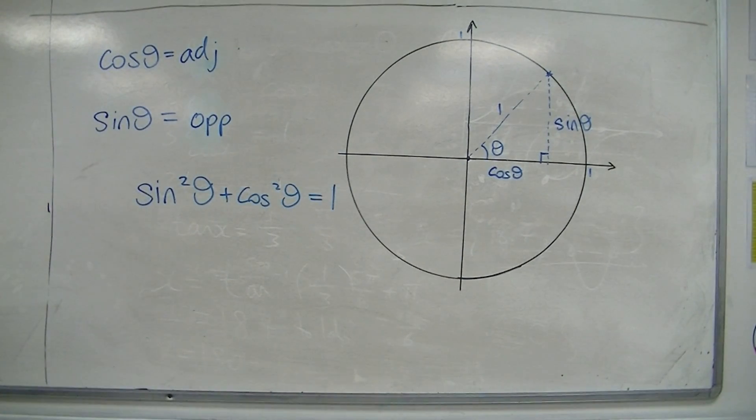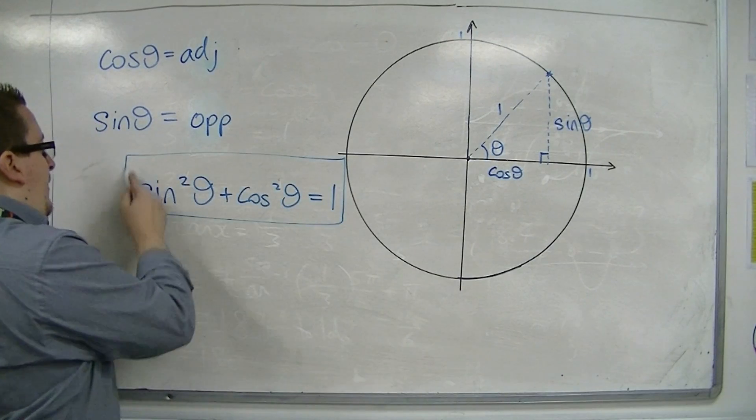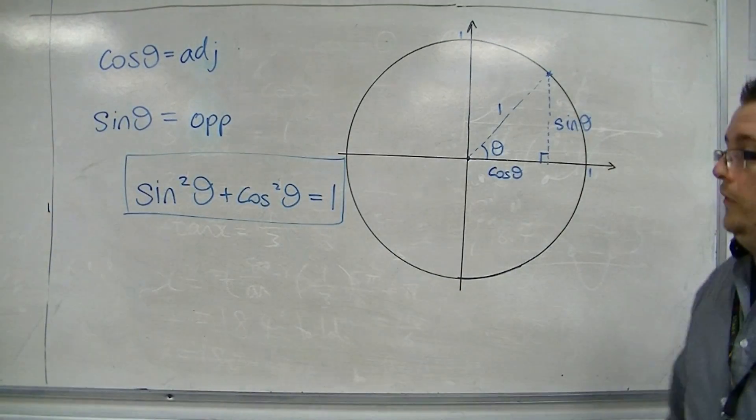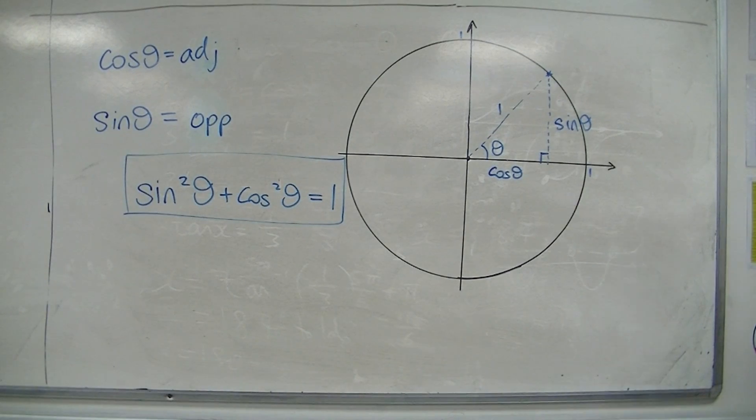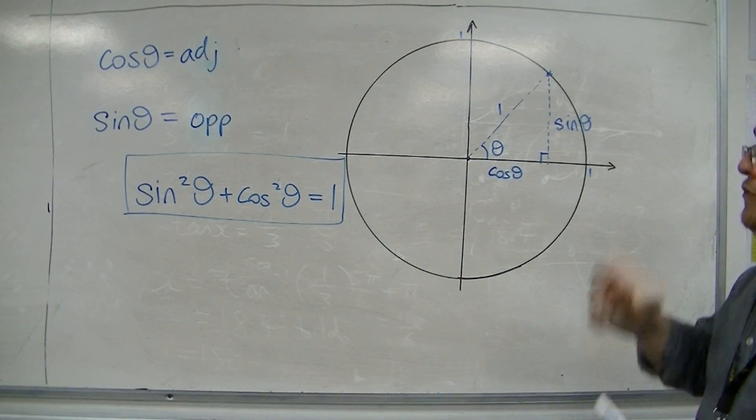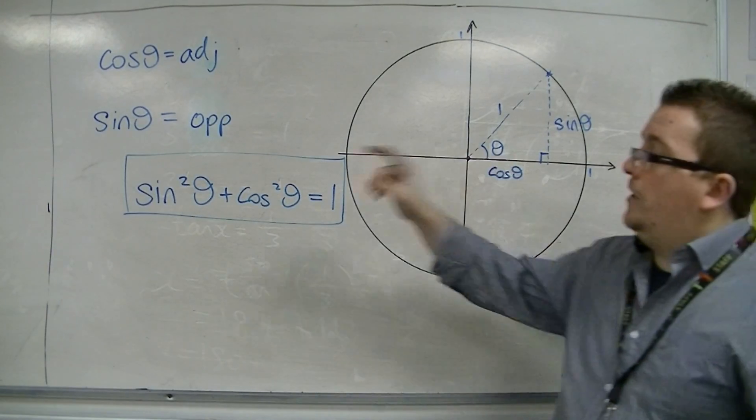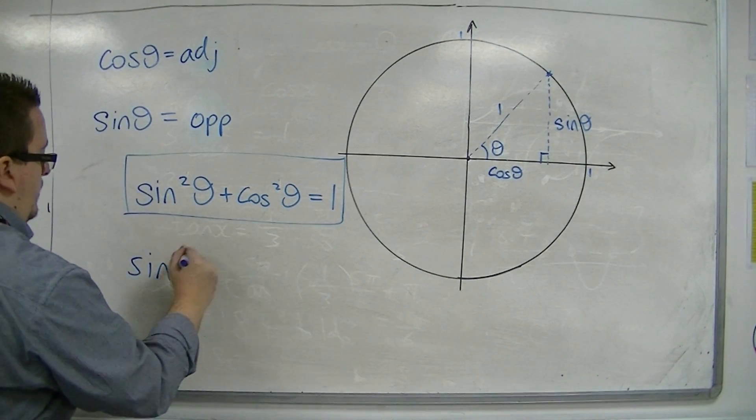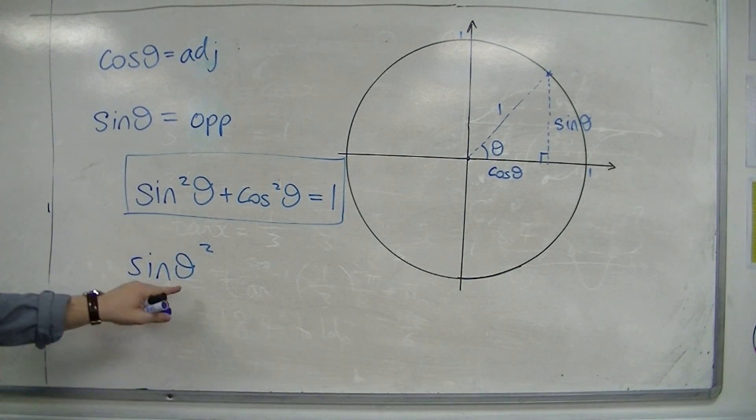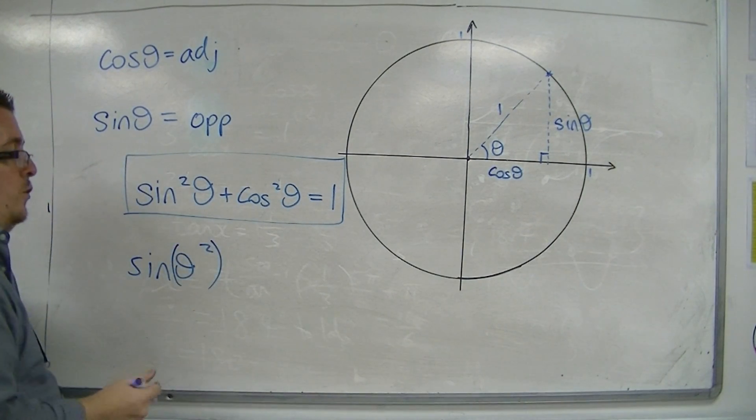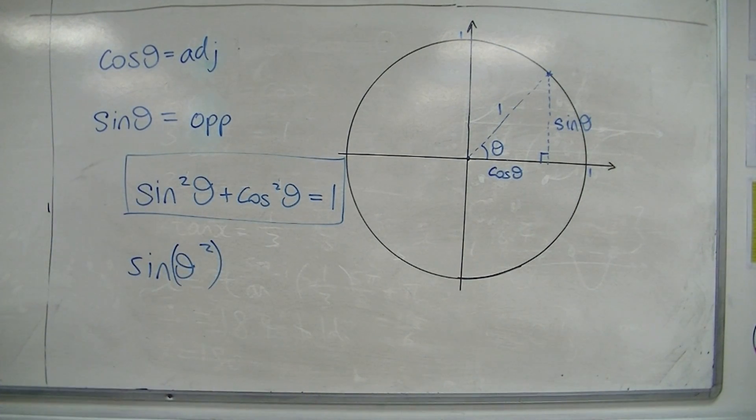So this is the second trig identity that we must know how to use. And it's a very important one which will keep coming back to us. Now, notice how we write sine squared theta rather than sine theta squared because that could get confused with sine of theta squared, which is a whole different ballgame.